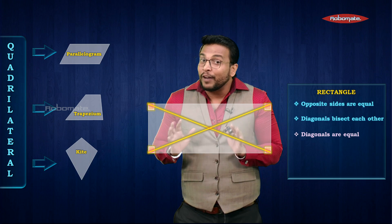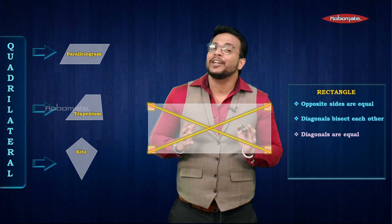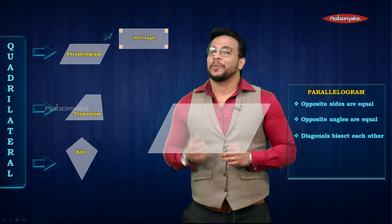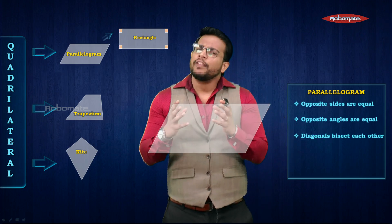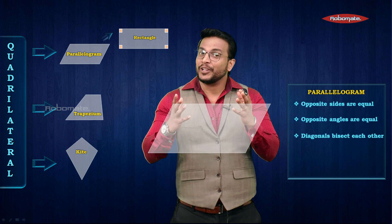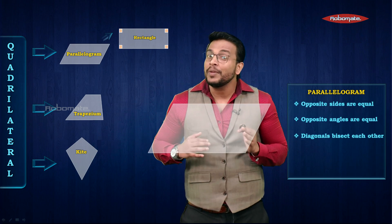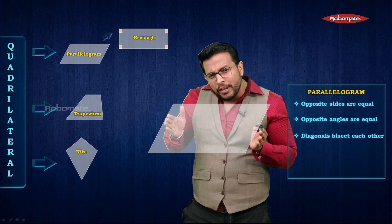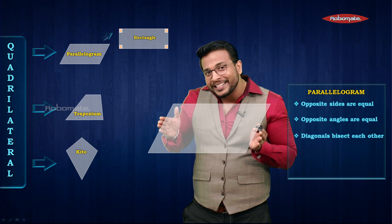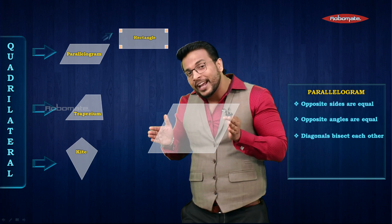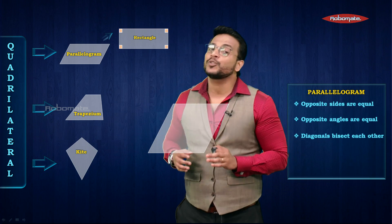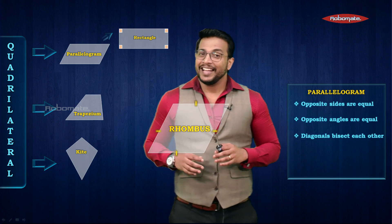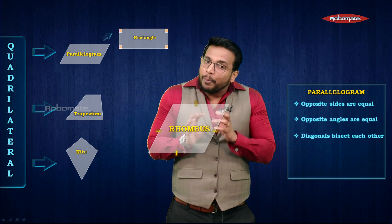We have understood what a rectangle is and its properties. Now let's consider a parallelogram again. We just modified it with respect to angles; now we are going to modify it with respect to its sides. I'm going to modify this parallelogram so that each of its sides is equal.